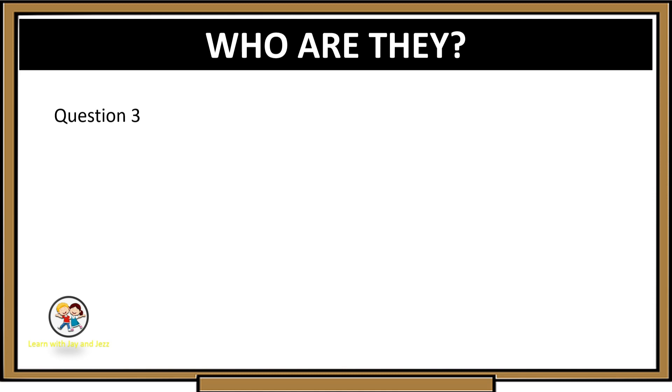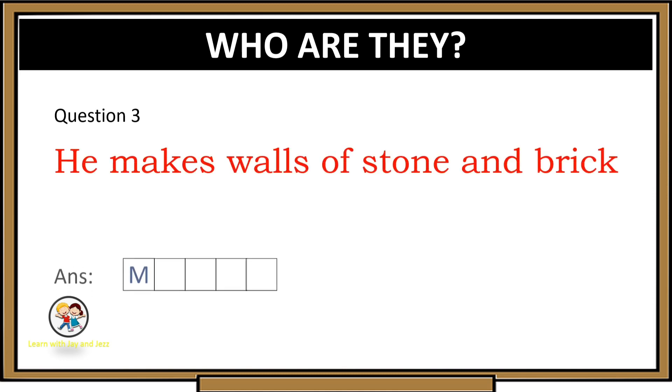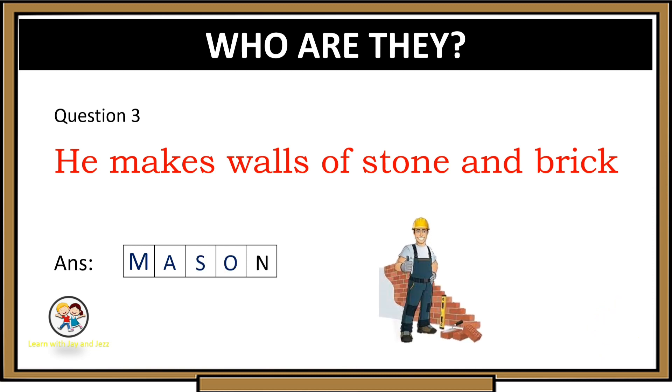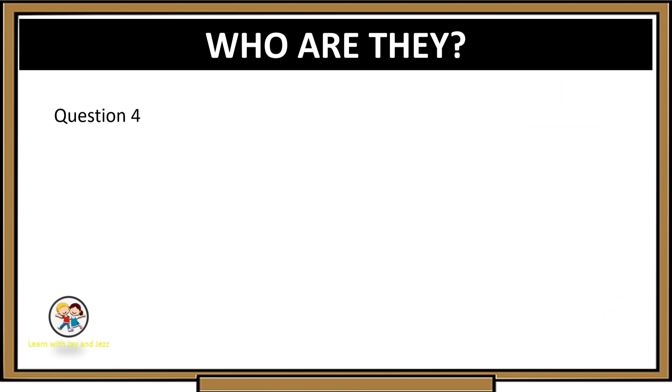Question 3: He makes walls of stone and brick. Mason. Question 4: He grows crops. Farmer.